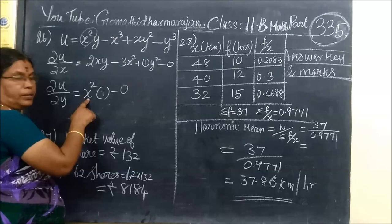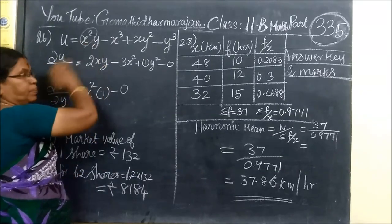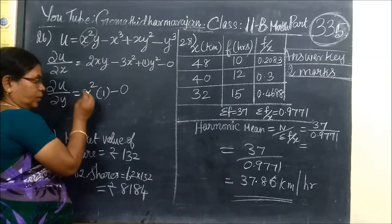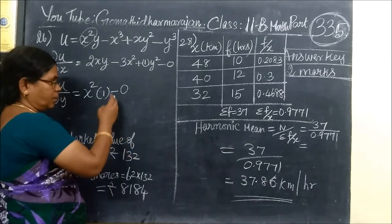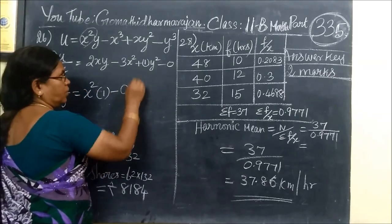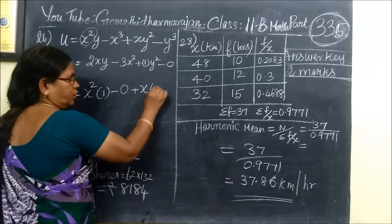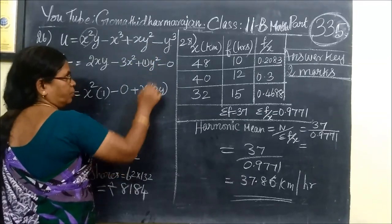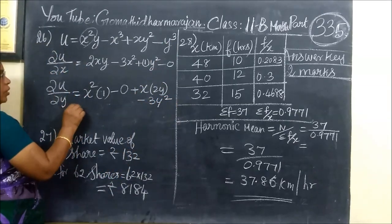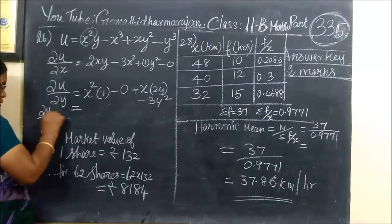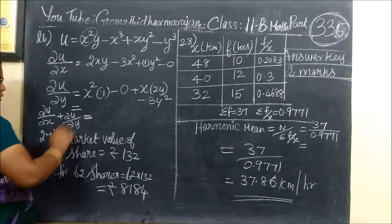Why is this 0? Because it has no y term — it is a constant with respect to y. The x is along with y squared, so differentiating gives 2y. Minus, then differentiate 3y squared. Now adding the partial derivatives: du/dx plus du/dy equals the result.